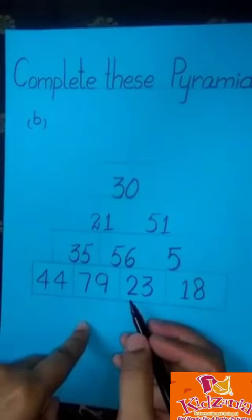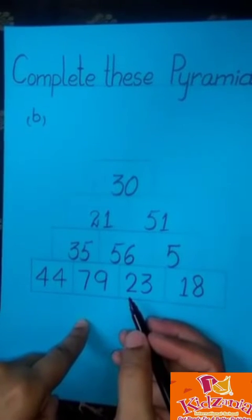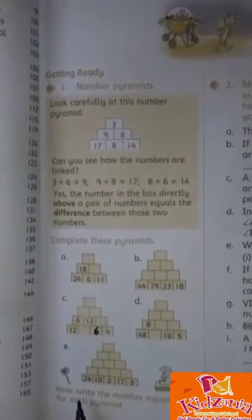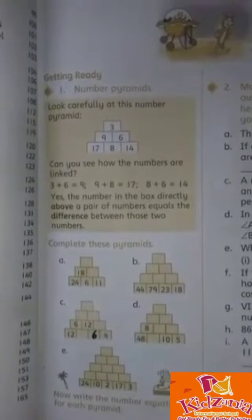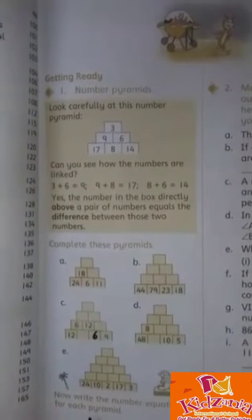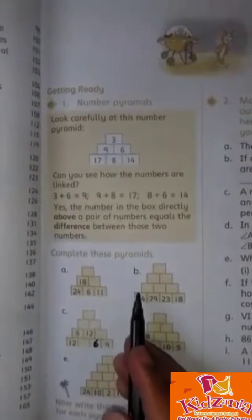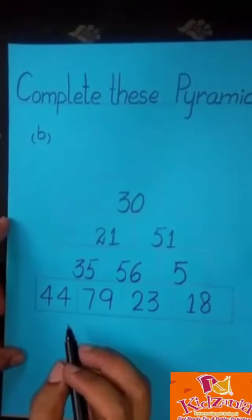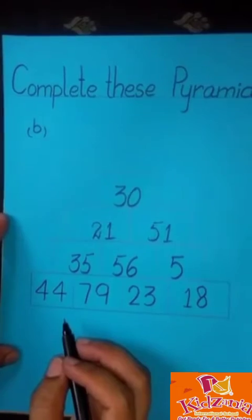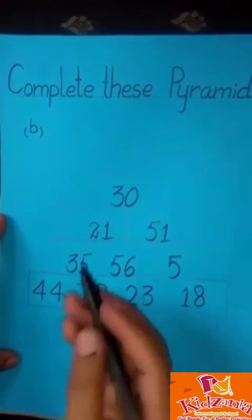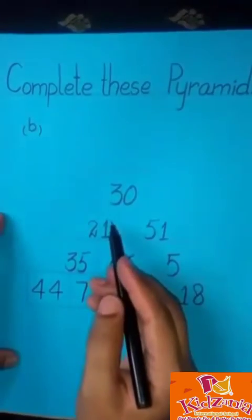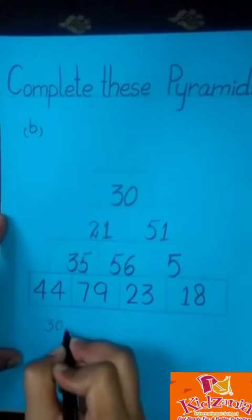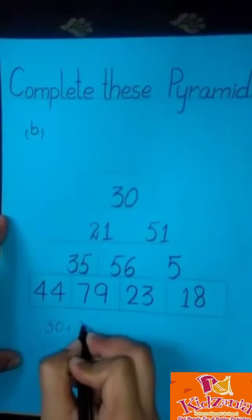Now we solve the pyramid. I hope you understand. Okay students, the next part is: now write the number equations of each pyramid. We solve pyramid B. Now we write the number equation of this pyramid. Okay students, now we write the number equations. First, we add 30 with 21. Our first equation is 30 plus 21.